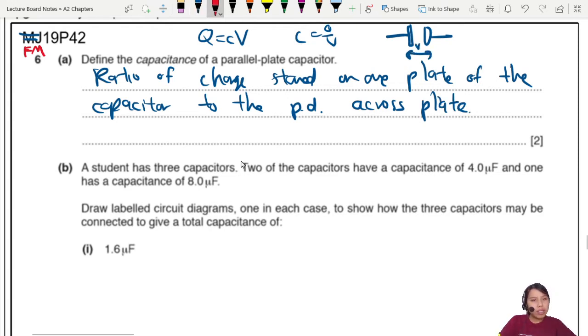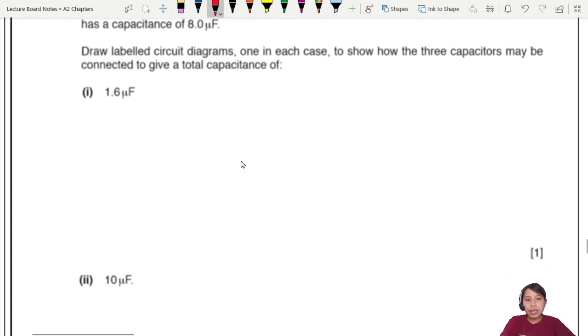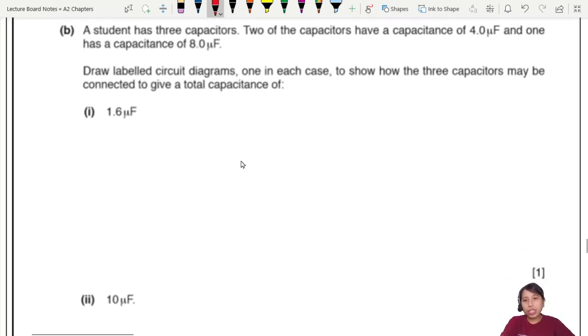This one can have two marks. Some older past year will give you three marks for it. Chart stored on one plate, PD across plate, that's A1. So first one, as you say, ratio of Q over V, and that is M1, A1. Okay, moving on. This is a build your capacitor type of question. Very open-ended. And it's only one mark. So don't spend too much time here.